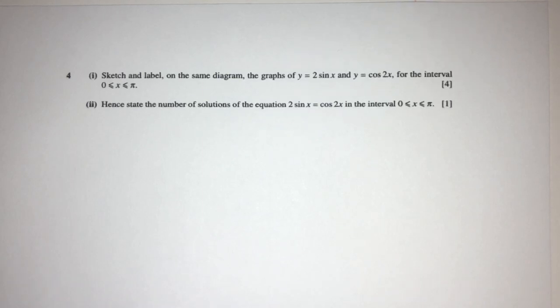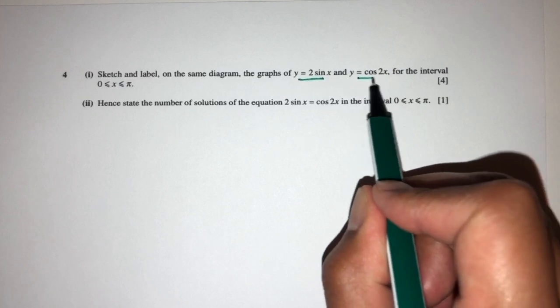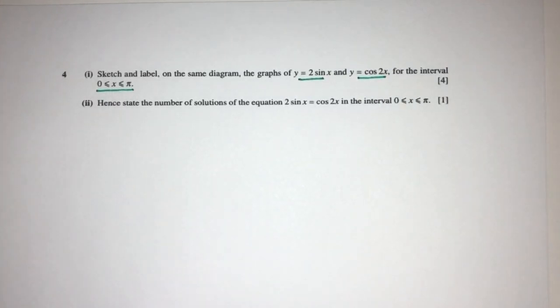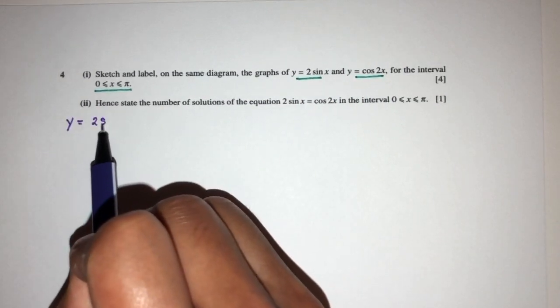Now in this question we have to sketch and label on the same diagram the graphs of y = 2sin(x) and y = cos(2x) for the interval 0 to π. One by one, let's begin with the first one, y = 2sin(x).